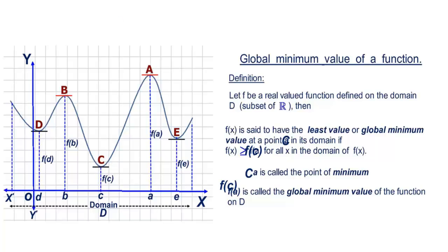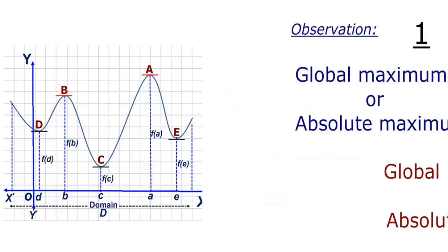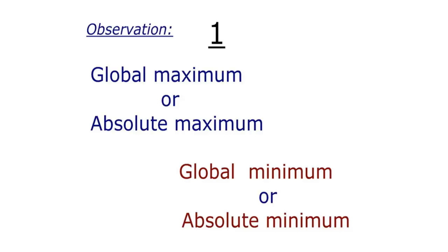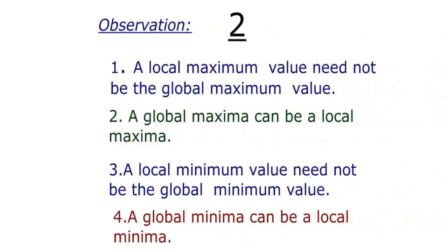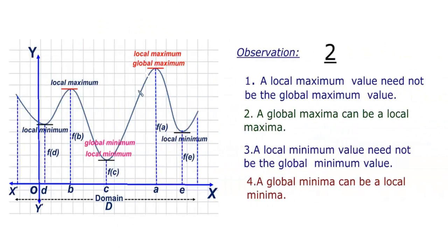Now that we have seen the definitions of global maximum and global minimum, let us see a few observations. First, global maximum is also called absolute maximum, and similarly global minimum can also be called absolute minimum — both mean one and the same. Second observation: a local maximum value need not be the global maximum value, but a global maxima can be a local maxima. Third: a local minimum value need not be the global minimum value, and a global minima can be a local minima.